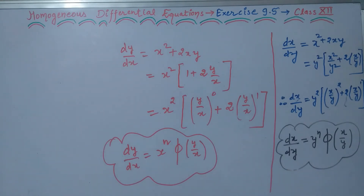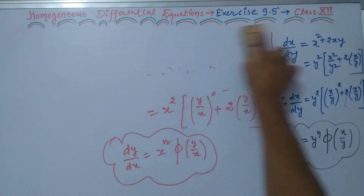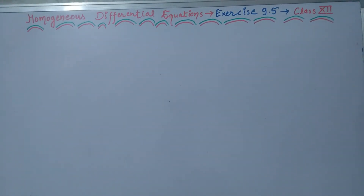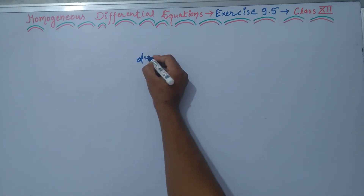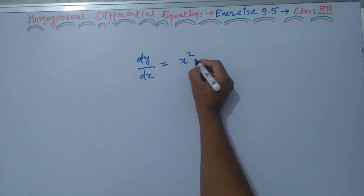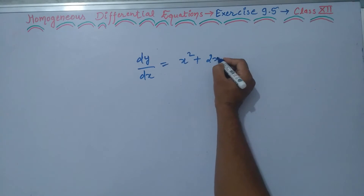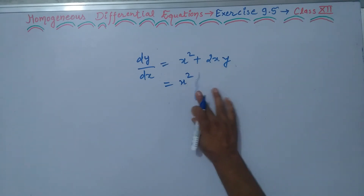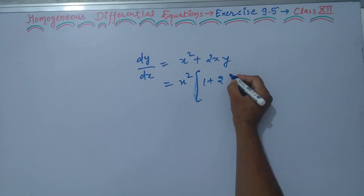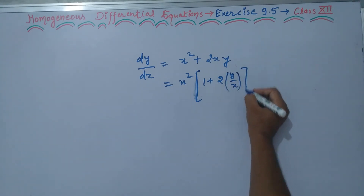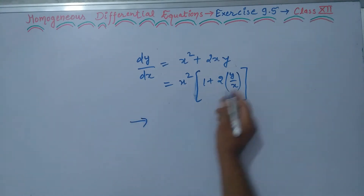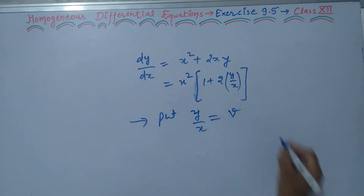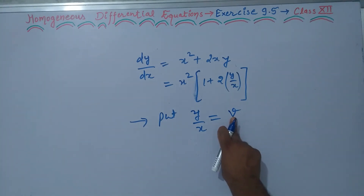Now, the question is: how do we solve a homogeneous differential equation? For the solution, suppose dy/dx equals x squared into 1 plus 2 times y upon x. The very first step is to put y upon x equal to v. Since v is also a variable, we say y equals v times x. Differentiating both sides with respect to x, dy/dx equals v into 1 plus x into dv/dx, applying the product rule.